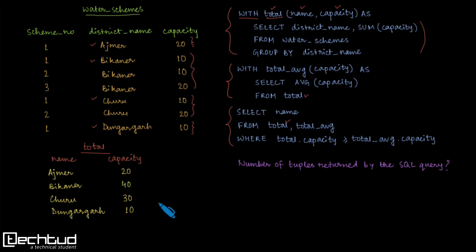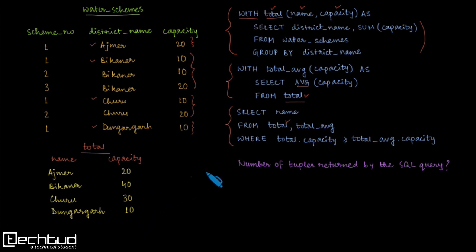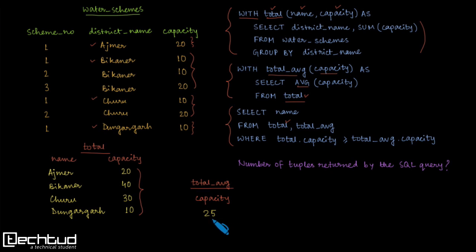The second WITH clause uses the result of the first — the 'total' table. Here we are not grouping rows; instead we apply an aggregate function, AVG, to find the average capacity across all four rows. The intermediate result is stored in a table named 'total_average' with attribute 'capacity'. Taking the average of all four values gives us 25, so that is the result of the second WITH clause.